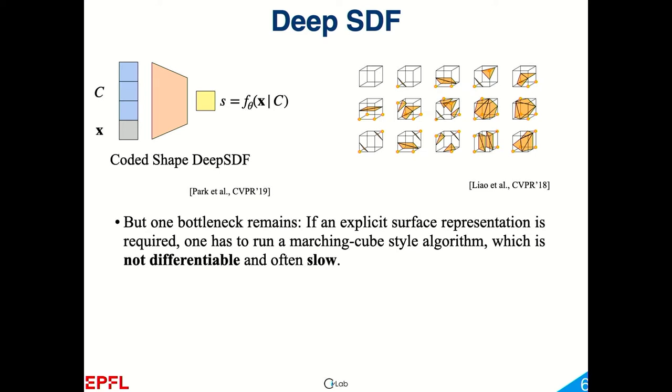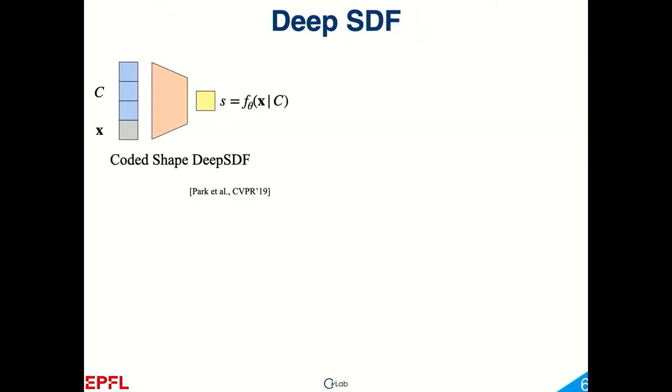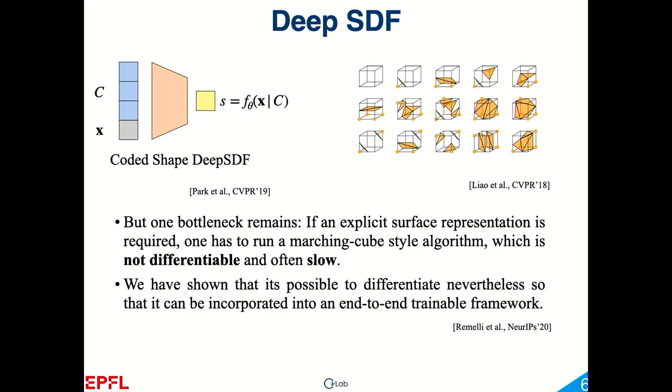That gives you surfaces that can deform and change topology by changing c. There's been a ton of literature about this in the last few years, but there's one bottleneck that remains: if you happen to need an explicit representation, for example to do high quality rendering or computer fluid dynamics, you need to get from the implicit to the explicit using marching cubes, which is inherently non-differentiable. This is a bit of a problem in our deep world. In fact, and that's our contribution, we've shown that it's not a problem because you get the vertices using marching cubes and then you can differentiate with respect to c even though marching cubes itself is not differentiable.